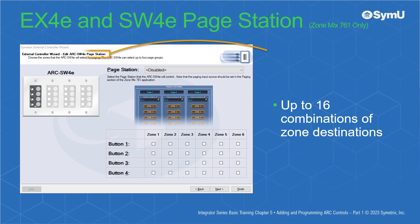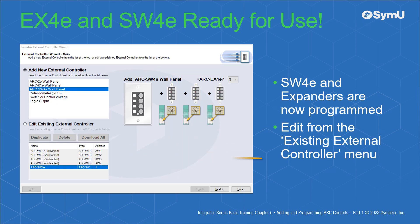Volume and Page Station is available on the ZoneMix 761 only. This mode allows up to 16 combinations of zone destinations depending on the number of EX4E expanders attached. The SW4E and expanders are now programmed for use and may be re-edited by selecting it within the existing External Controller menu.